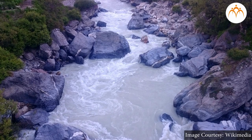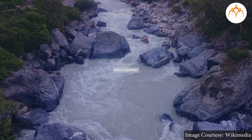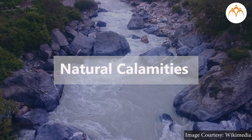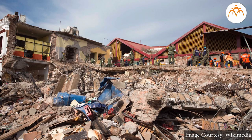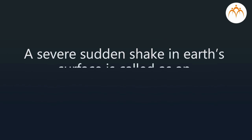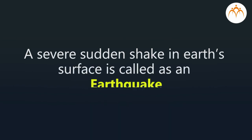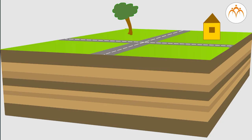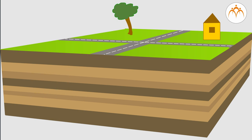Earthquake is a powerful and catastrophic natural disaster. A severe, sudden shake in the earth's surface is called an earthquake. In this disaster, the earth's surface shakes in a horizontal or vertical direction, and due to this the land shakes.